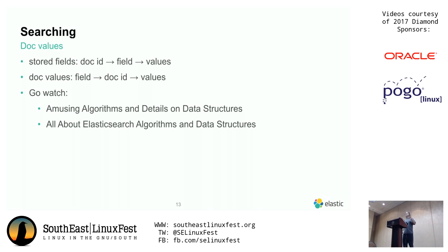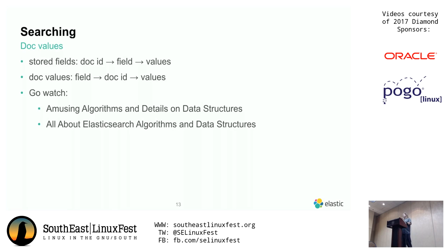Instead of chunking and compressing together like stored fields, doc values uses numeric tricks and lookup tables. It knows statistics about the fields and uses that to compress them. For example, if you have only ten values ever for a particular field, it will make a lookup table for all ten of them, and then each document will get a nibble — four bits, enough to address ten values. So you need only half a byte to store all of these values, which is fairly good.